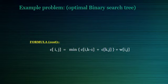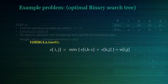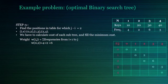For further steps of the problem, we will require the formula to calculate the cost where i is less than k and k is less than or equal to j. Step 3: Find the positions in table for which j minus i equal to 2, i.e., 0,2; 1,3; and 2,4. We have to calculate cost of each subtree and fill the minimum cost.